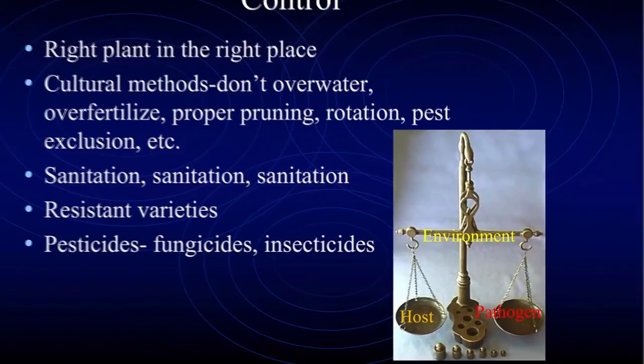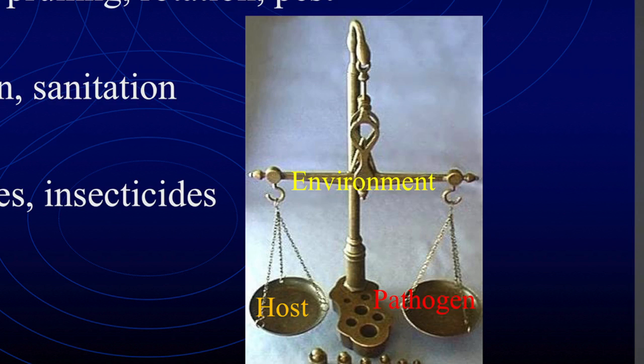Remember that plant disease triangle? You've always got the host, you've always got the pathogen, and you've got the environment. You've got to tilt it. You take all your little weights - the variety, the sanitation - and put them to favor the host side. The only thing you can really alter is your environment. Try to weight that on the side of the plant you're trying to grow. Plants like bougainvillea and callistemon I just about never see in the lab, so they're good so far.